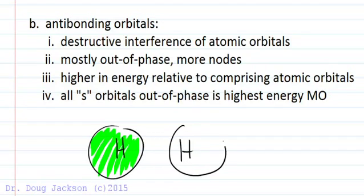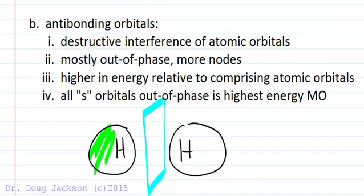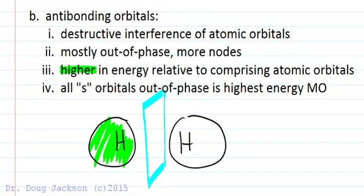As we bring the hydrogen atoms together into the hydrogen molecule, our molecular orbital is going to have a node in the middle. We'll cancel out that area in between the atoms where they are closest together, and we will form an antibonding orbital that has a nodal plane down the middle. This is an antibonding orbital that's higher in energy relative to the atomic orbitals. All s orbitals out of phase or all p orbitals out of phase can be the highest energy molecular orbital.